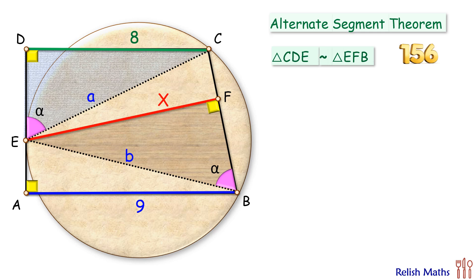So here the ratio of the sides will be equal. That is CD upon CE will be equal to EF upon EB. Putting the values here, CD is 8 and CE is a, and same way EF is x and EB is b. Cross multiplying we get b upon a